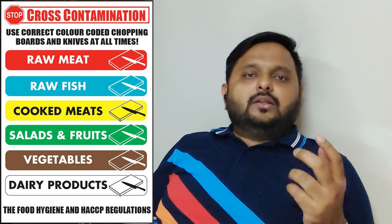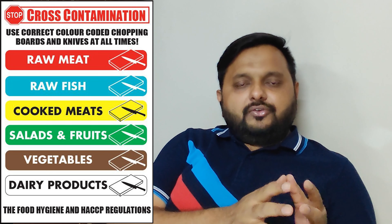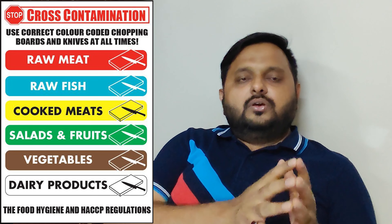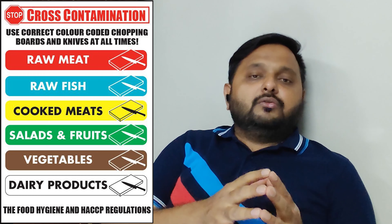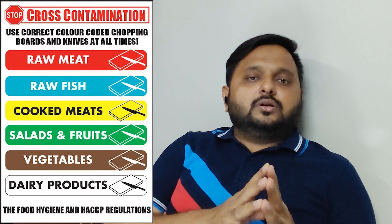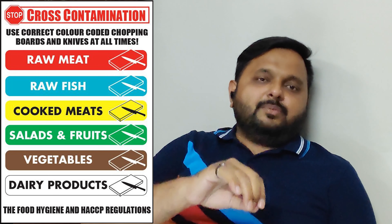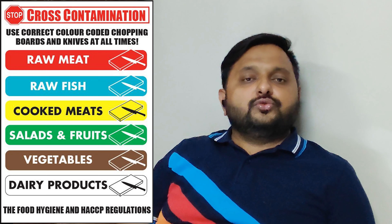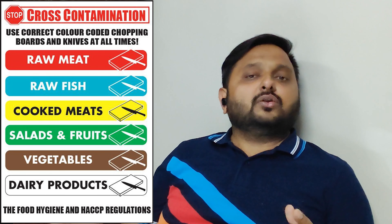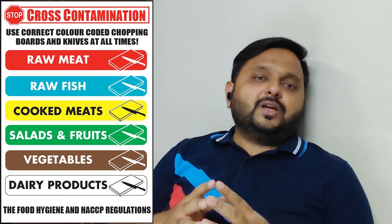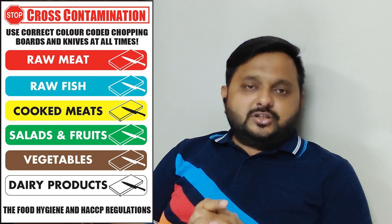One key thing about equipment is color coding. The color coding standard says that if you are using a particular color of cutting board, knife, or any equipment for raw food, that same color should not be used for ready-to-eat food. There must be segregation and color coding; otherwise, when colors get mixed, cross-contamination will happen.